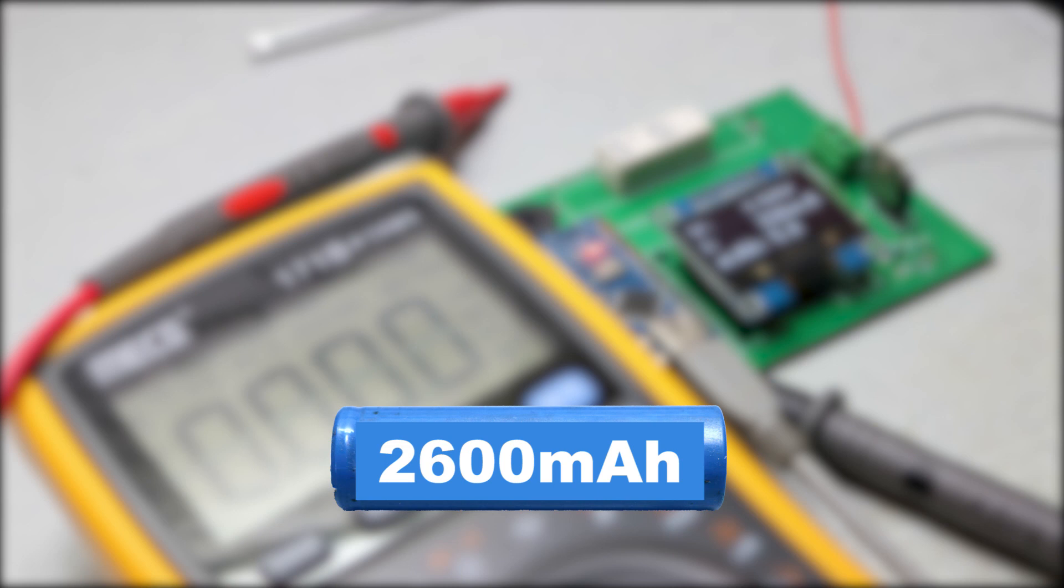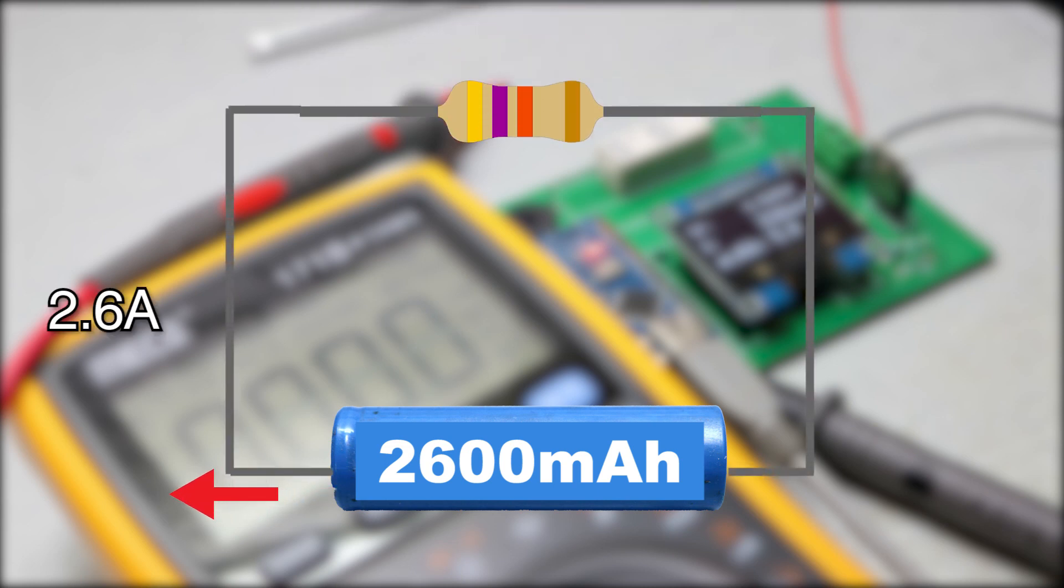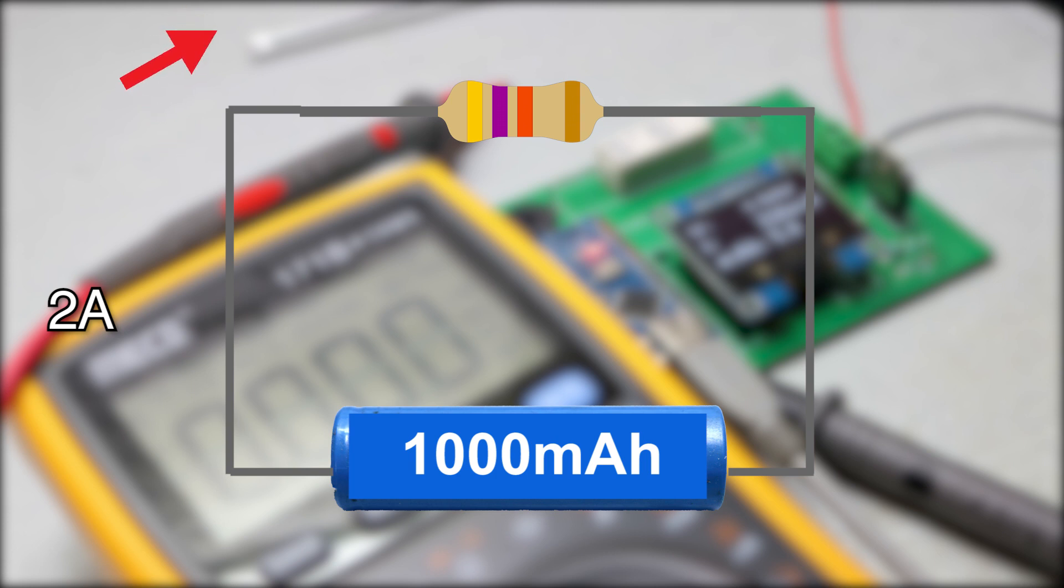Basically what this means is if we connect a load across it which draws 2.6 ampere then this battery would last for an hour. Similarly if I have a 1000 milliampere battery and I connect a load across it and if it draws 2 ampere from it, it would last for 30 minutes. And this is what an ampere or milliampere means.